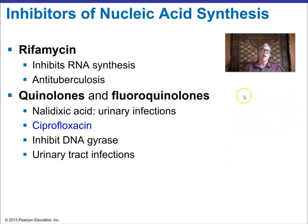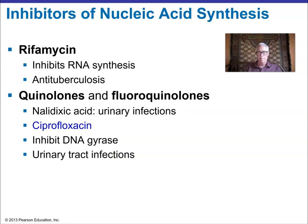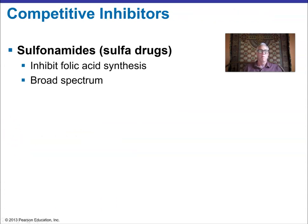Rifamycin inhibits RNA synthesis and is useful against tuberculosis. Quinolones and fluoroquinolones — including ciprofloxacin, nicknamed Cipro, used a lot in military applications — are nucleic acid synthesis inhibitors. They'll come up in discussions of specific diseases later.